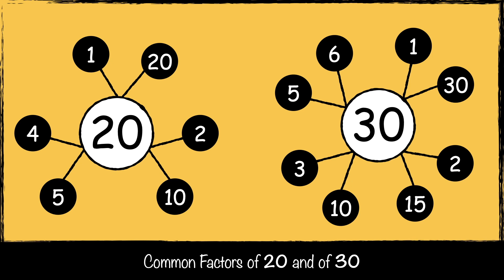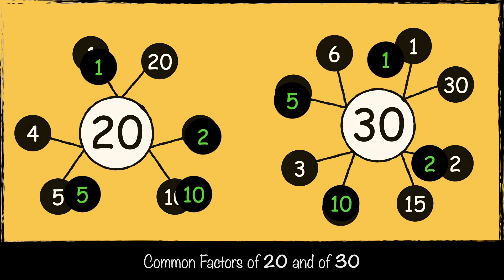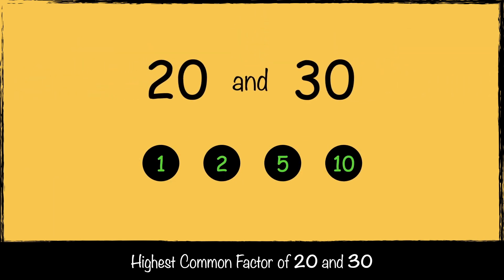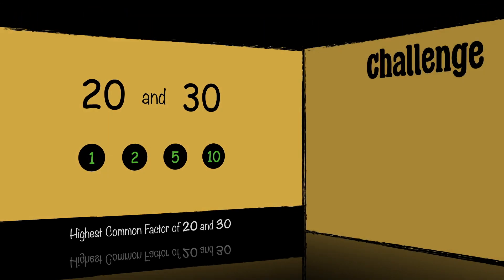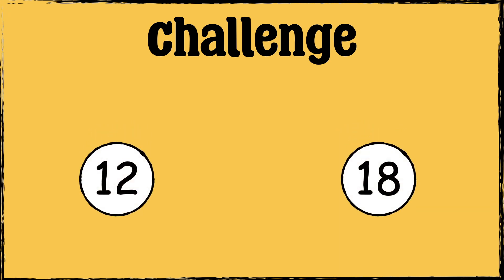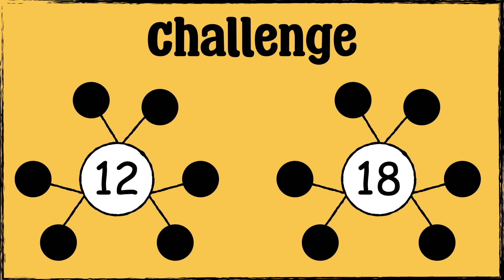Now we can find the common factors — what factors do both 20 and 30 have? 1, 2, 5, and 10. So the highest common factor of 20 and 30 is 10. Now it's your turn: can you find the highest common factor of 12 and 18? First you'll need to find the factors of each number — let me know your answer in the comment section.